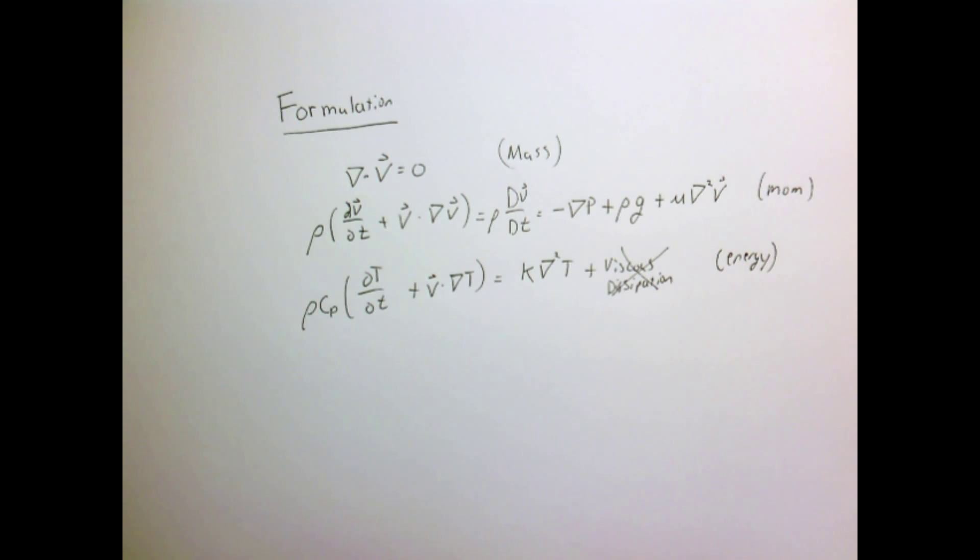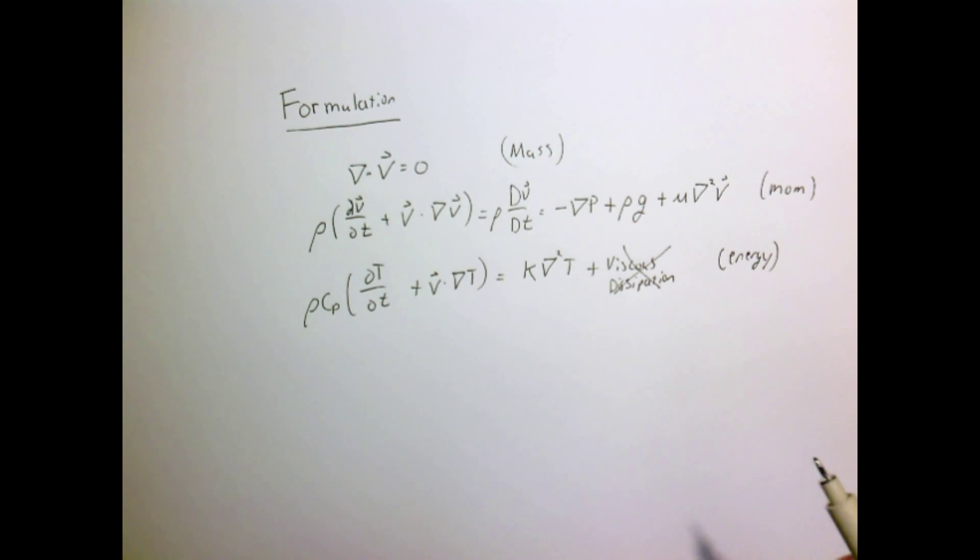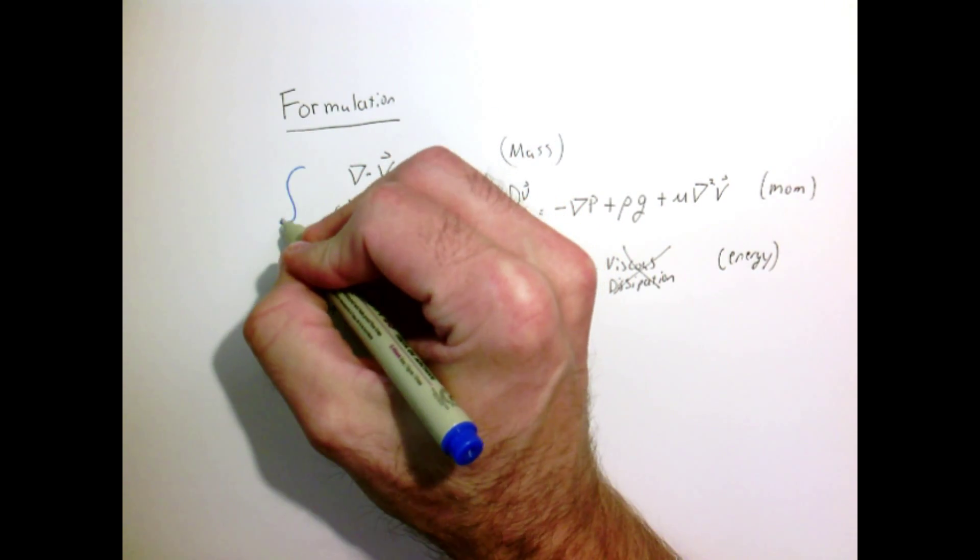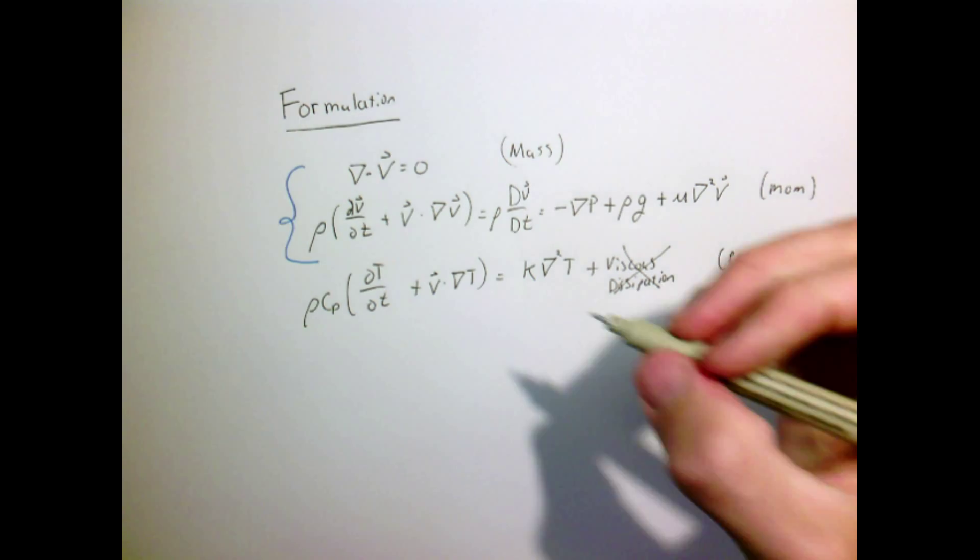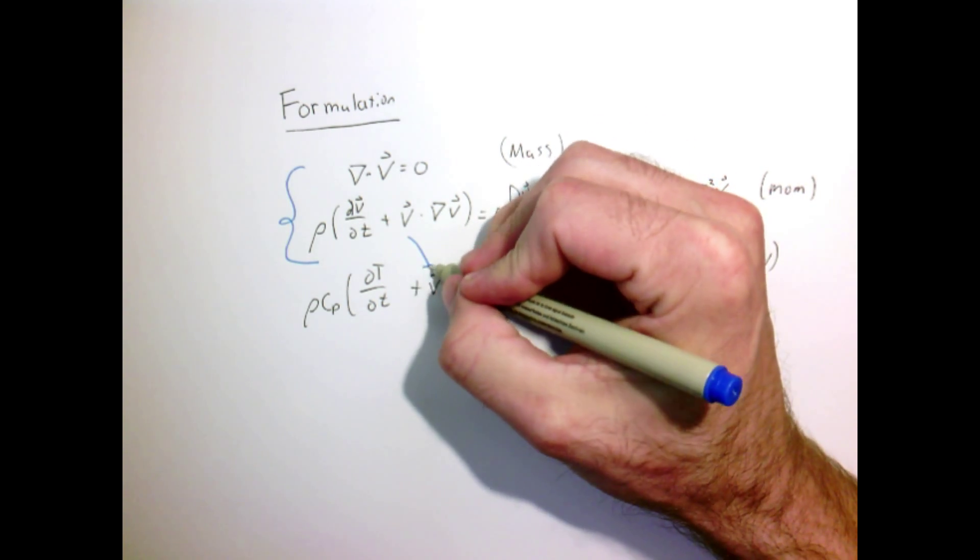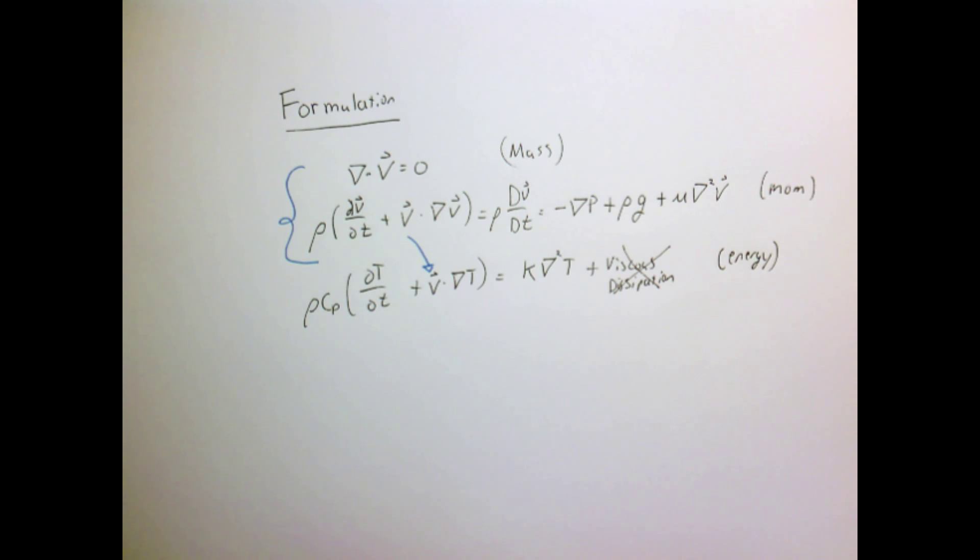When we talked about forced convection, we talked about a one-way coupling. We essentially solved our momentum and mass problem first. That gave us the velocity field. We then took that velocity field and stuffed that into our energy equation, because the fluid velocity could carry energy or heat around our domain.